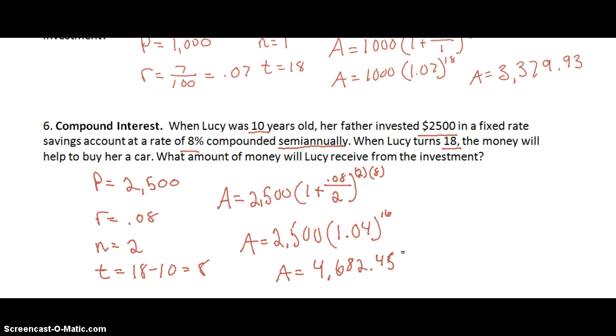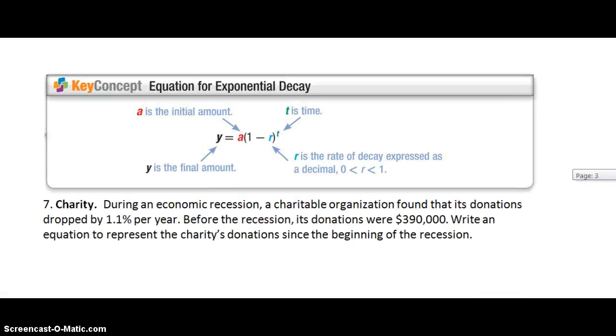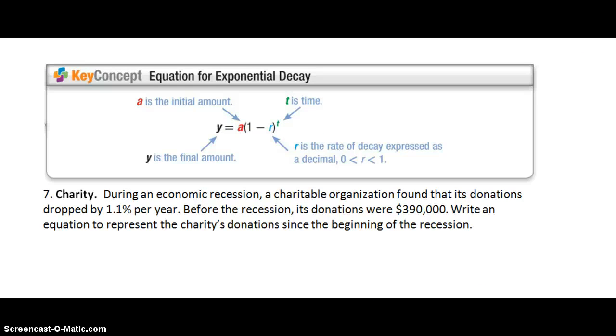Cool. So she'll be able to buy a pretty nice used car. So let's take a look over at our last example, our last key concept, which is the equation for exponential decay. We looked at exponential growth. We looked at compound interest. Now we're looking at decay.